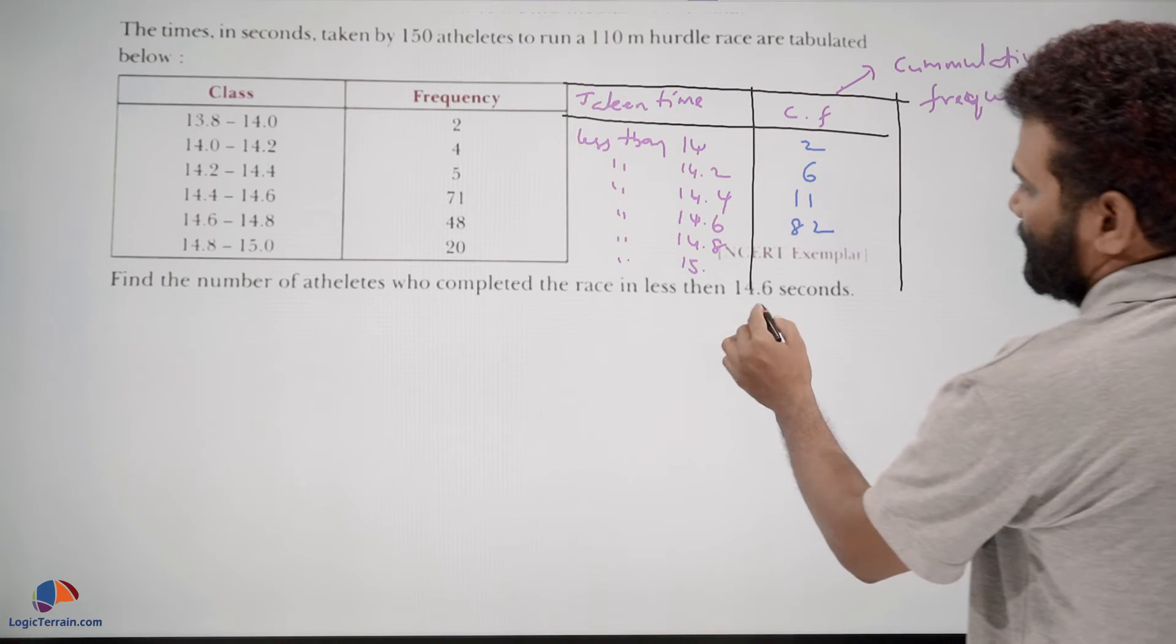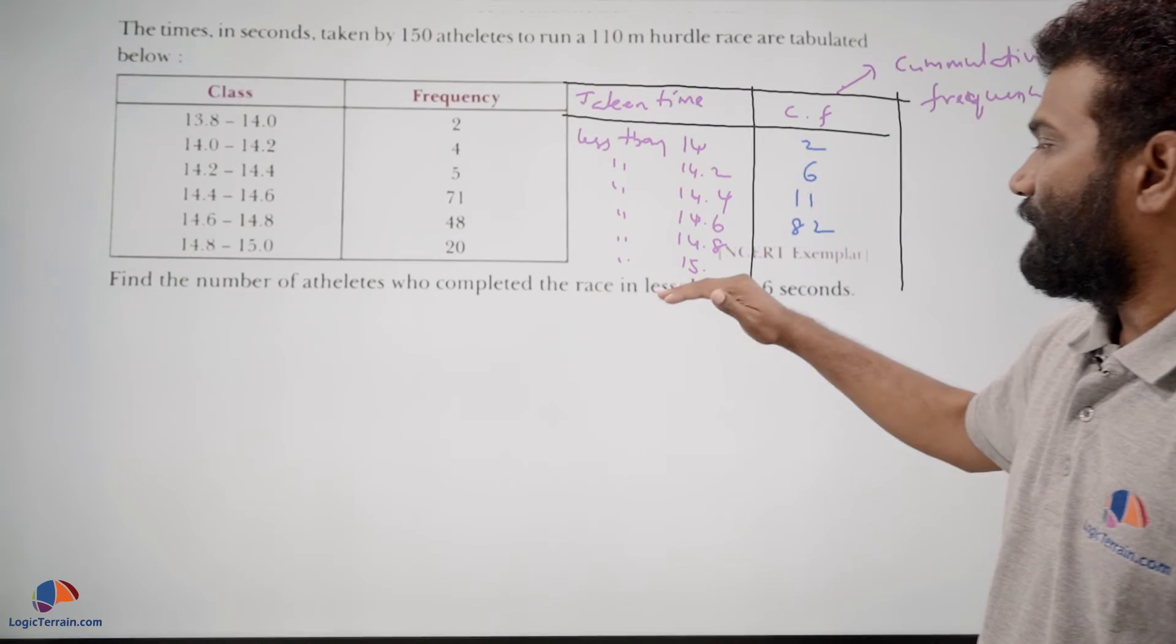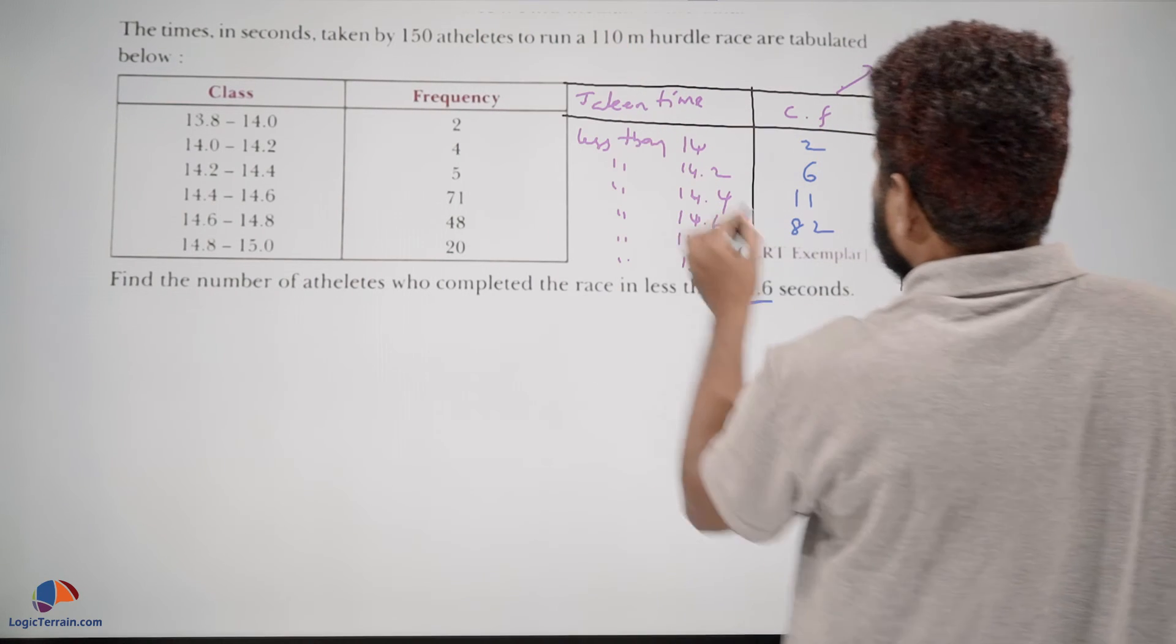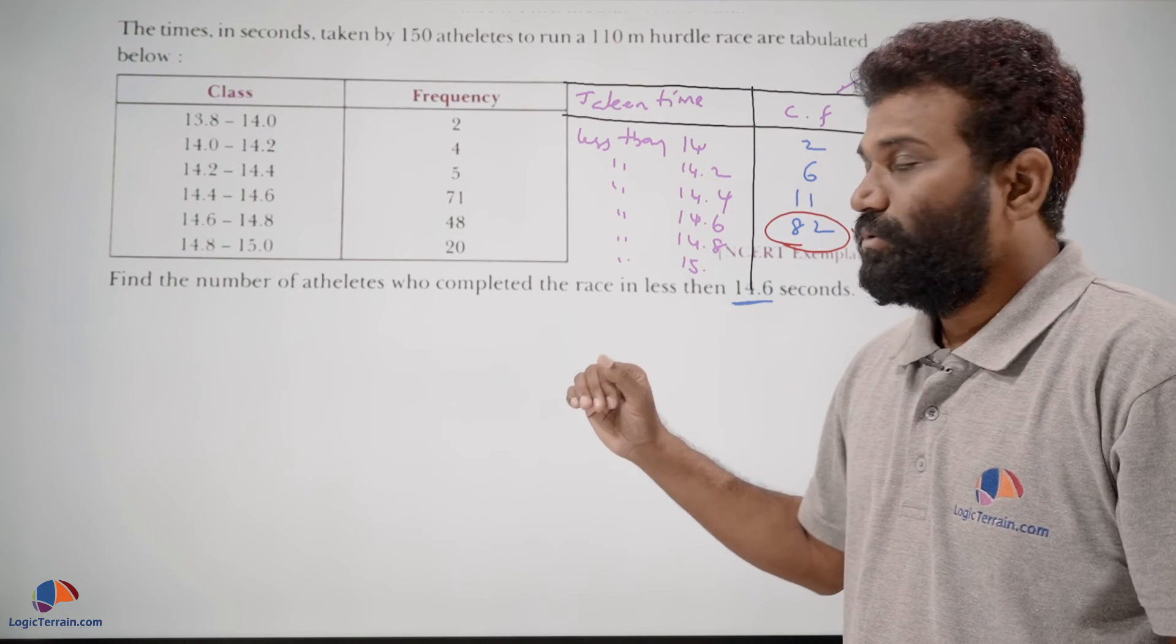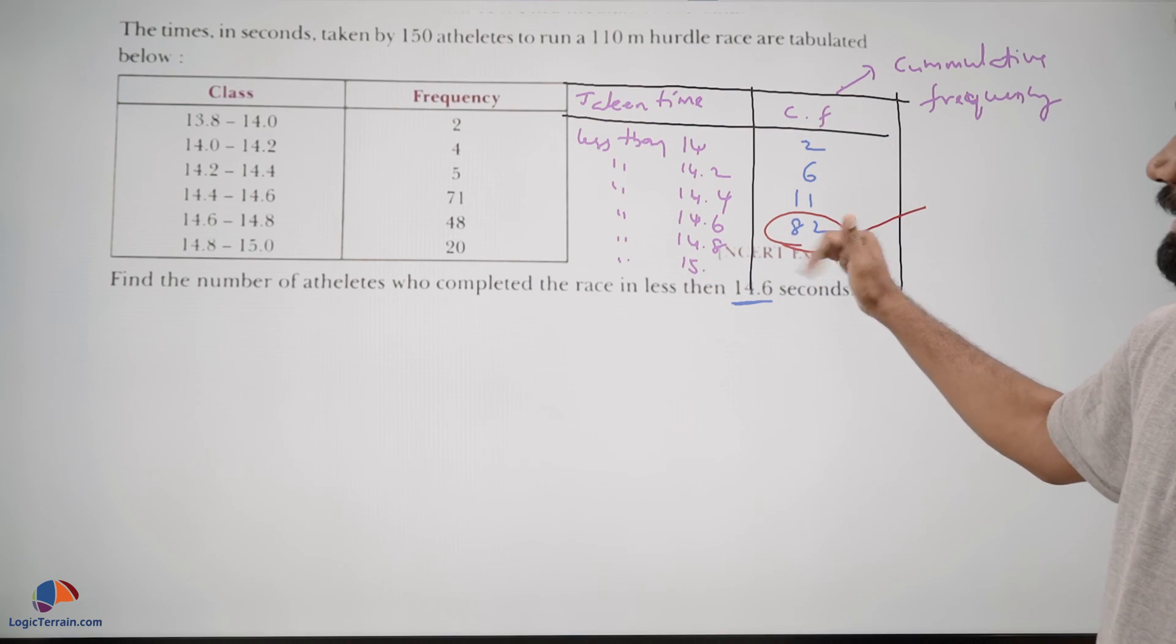Actually in this question they have asked us to find the number of athletes who completed the race in less than 14.6 seconds, that is 82 athletes.